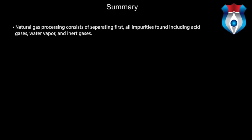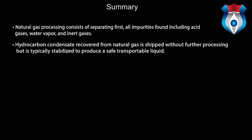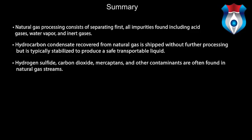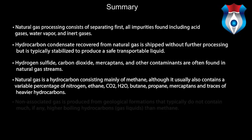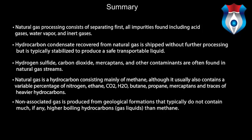In summary, natural gas processing consists of separating all impurities including acid gases, water vapor, and inert gases. Hydrocarbon condensate recovered from natural gas is typically stabilized to produce a safe, transportable liquid. Hydrogen sulfide, carbon dioxide, mercaptans, and other contaminants are often found in natural gas streams. Natural gas is a hydrocarbon consisting mainly of methane, but also contains variable percentages of nitrogen, ethane, CO2, H2O, butane, propane, mercaptans, and traces of heavier hydrocarbons. Non-associated gas is produced from geological formations that typically do not contain much higher boiling hydrocarbons beyond methane.